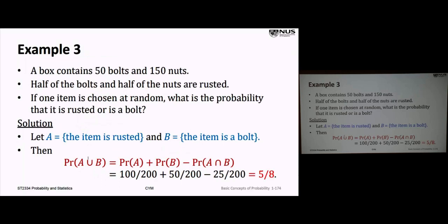Example two: we have a box with 50 bolts and 150 nuts. Half the bolts and half the nuts are rusted. If one item is chosen at random, what is the probability that it is rusted or is a bolt? We characterize the event A as the item is rusted, and event B as the item is a bolt. We're asked for the probability of A or B — the probability of A union B. They're certainly not mutually exclusive, because an item can be rusted and a bolt simultaneously.